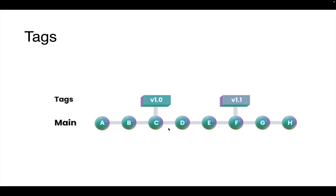Git tags are landmarks within git history, typically marking a significant milestone in the project's development — such as a release, a version change, or a standout commit. They represent the version of your application or something very important that happened. You can associate tags with commits, and since they are linked to commits, even if you change the branch, the tags are going to be shared.